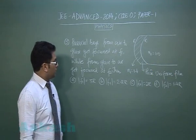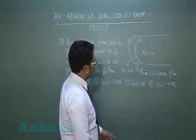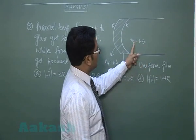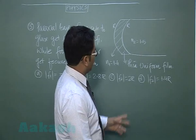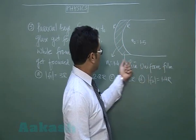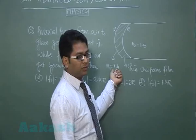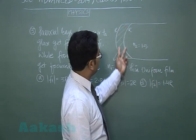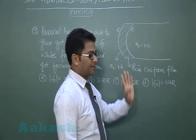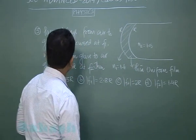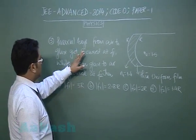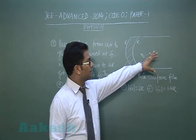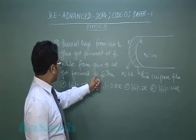Question number three is from ray optics. Glass cylinder of refractive index 1.5 and there is a thin uniform film of refractive index 1.4. Notice the word uniform, that means thickness here, here, here, everywhere the thickness is same. The question says paraxial rays from air to glass get focused at f1, while from glass to air get focused at f2.